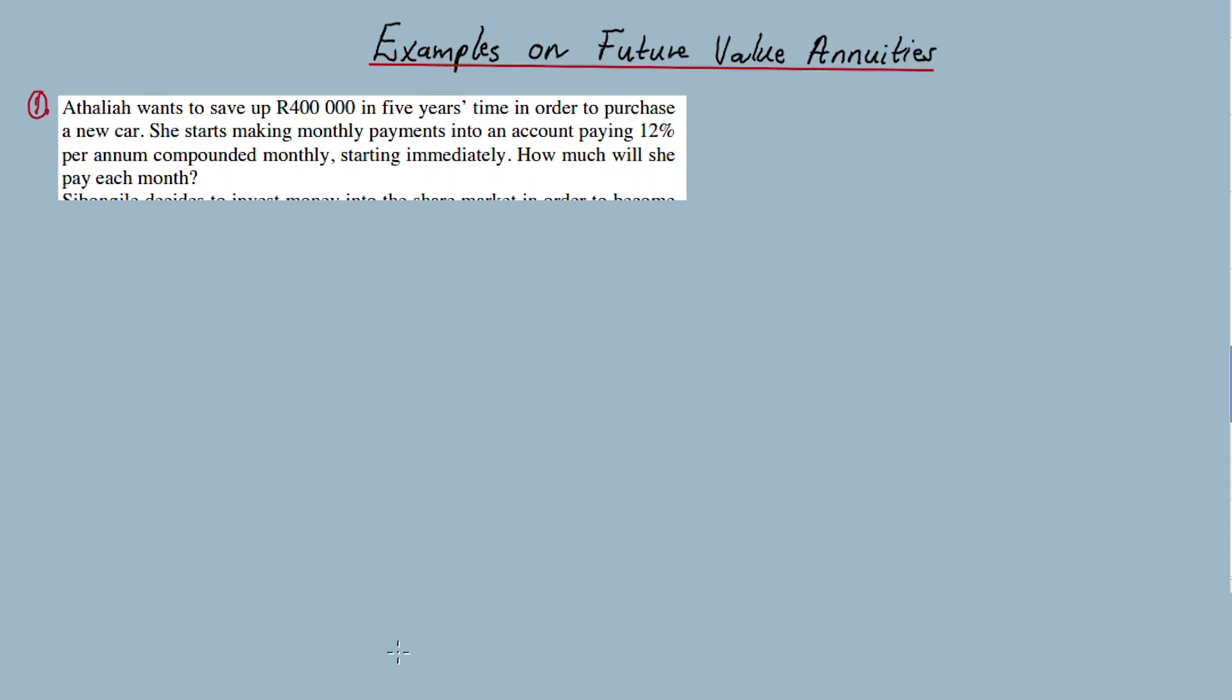Okay, good lesson learners. Welcome to more examples on future value annuity. In the description box is a link to an introduction to future value annuity, but what I've done here is only shown you how to calculate F, the future value, which is F equals X times one plus i to the power n minus one, everything divided by i. I've only shown you how to calculate F.